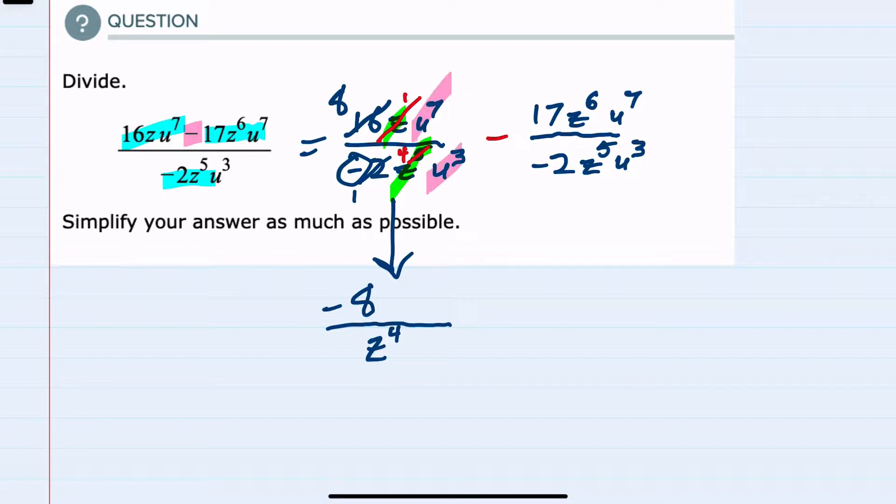Looking at the U's, I have seven U's in the numerator and three in the denominator. These three are going to cancel three of these, leaving me with just four. And the four U's are in the numerator. So we have simplified the first fraction.